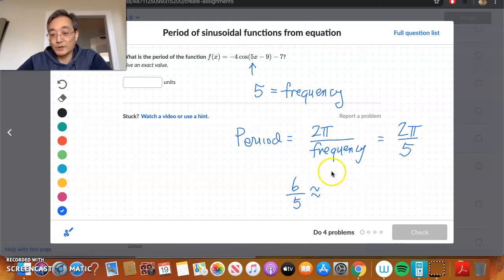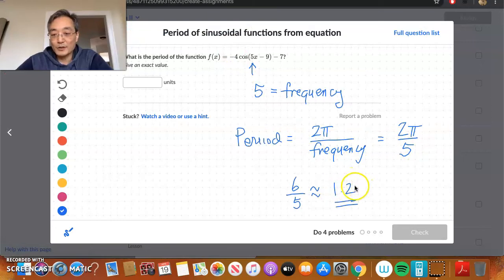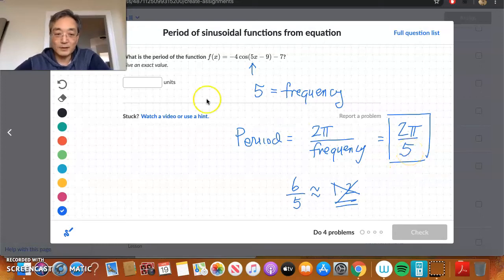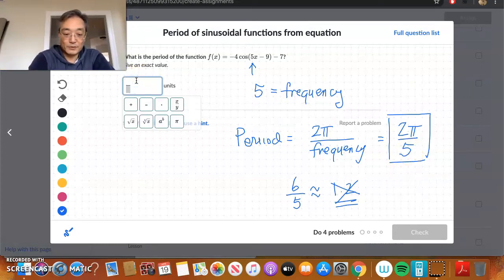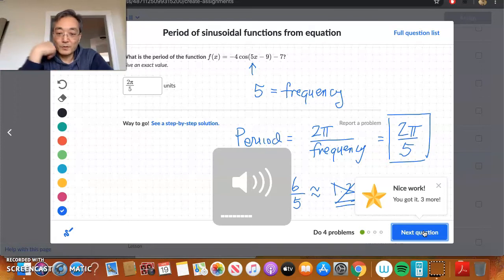And, that sort of confirms what we got when we did this calculation. That's roughly 1.2. However, they want an exact answer. So, we're not going to change it to decimal places here. We're just going to leave it with the pi, like that. Okay? And, that's going to serve as our exact answer. So, let's type it in and make sure it's correct. So, we're going to have 2 pi over 5. And, that is correct. Let's move on to the next question.